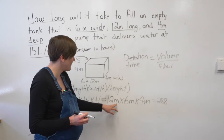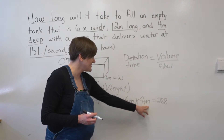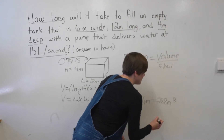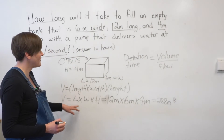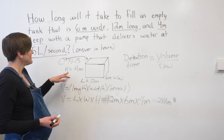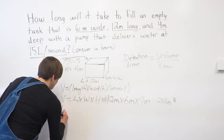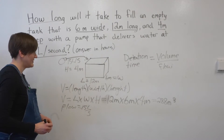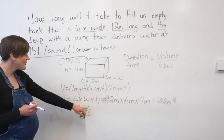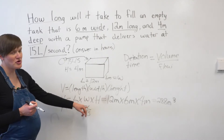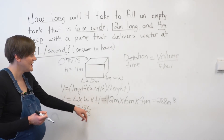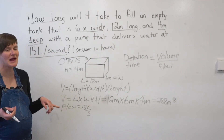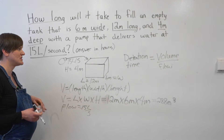The units here — I've got meters times meters times meters — so that's meters cubed. So now I know my volume that I can use in this formula, and I've got a flow rate of 15 liters per second. But I've got liters as my volume unit within this flow rate, and here I've got meters cubed, so I can't throw these into my formula just yet.